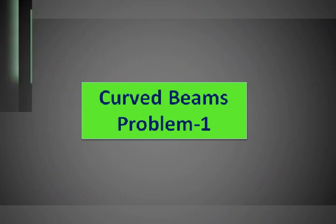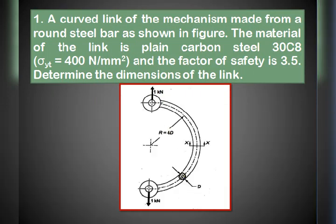The problem statement is: a curved link of a mechanism made from a round steel bar. The material of the link is plain carbon steel 30C8, with yield stress in tension sigma_yt equal to 400 N/mm². The factor of safety is 3.5. Determine the dimensions of the link. From the sketch, the link is subjected to a load of 1 kilo Newton, with bar diameter D and radius at centroidal axis R.